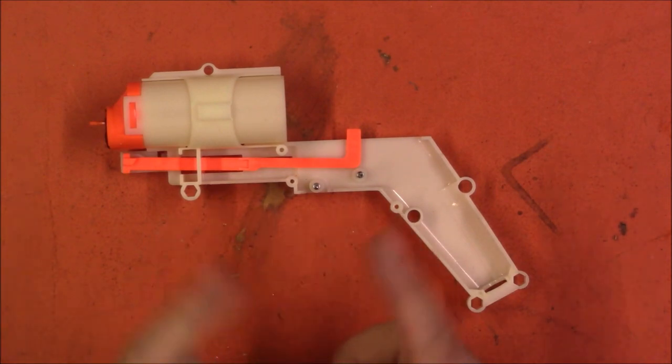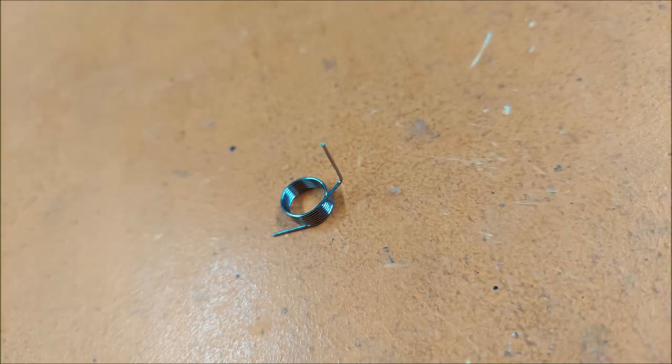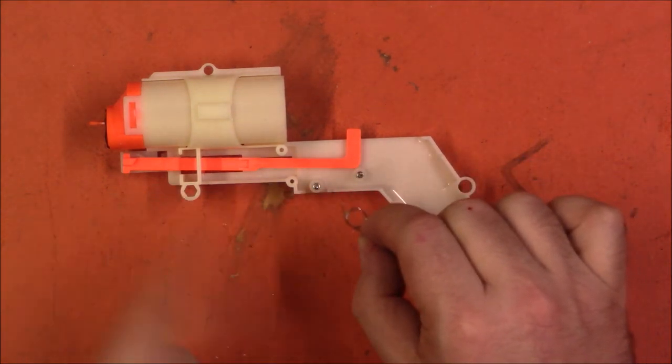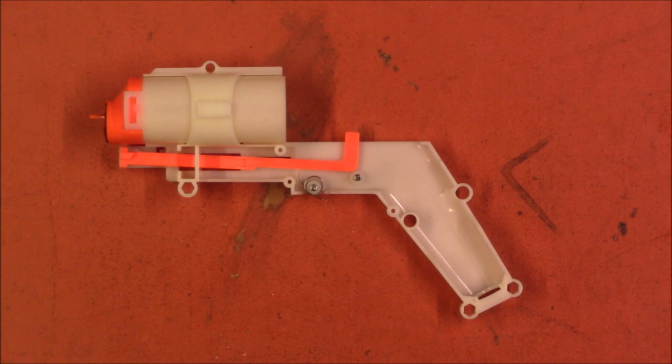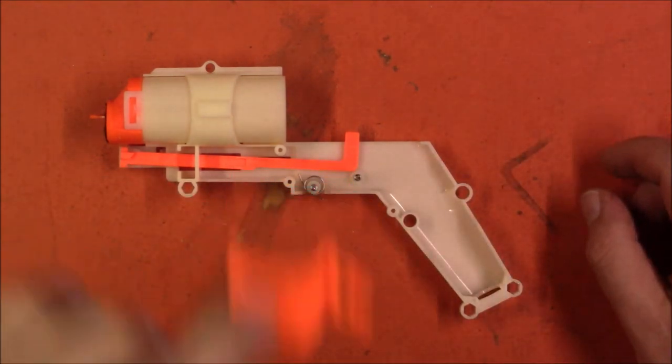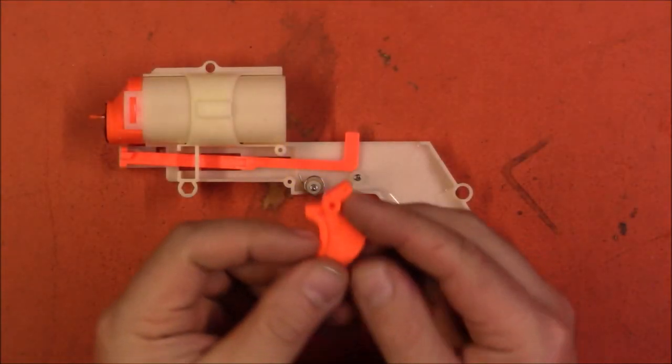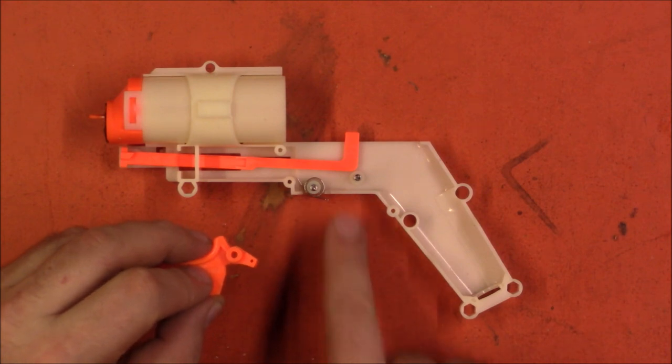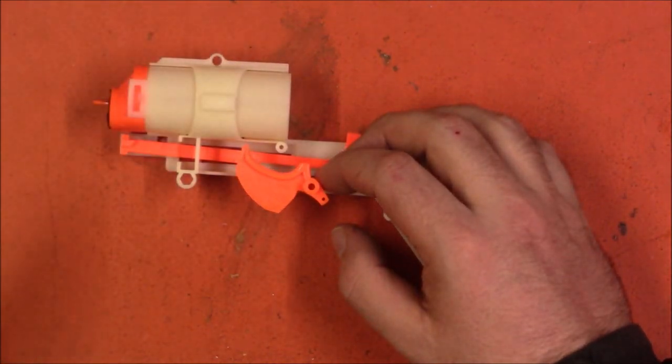The next part that we're going to put in is actually going to be the trigger. And this is another part that probably is tricky for a lot of people. And that is getting the trigger return spring in here properly. And the easiest way I have found is to first put it on this leftmost post in this configuration. We're then going to slide our trigger down and you'll notice the trigger has a very small hole on the top of this knob. And that is going to go over that vertical part of the spring.